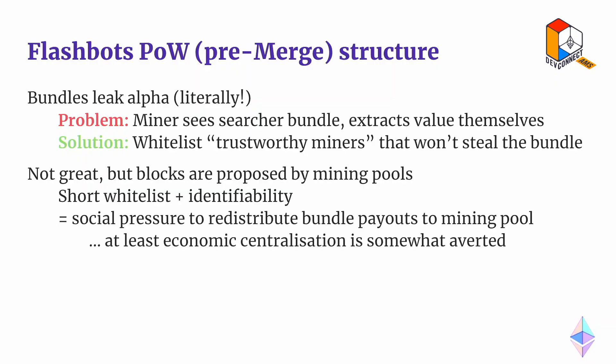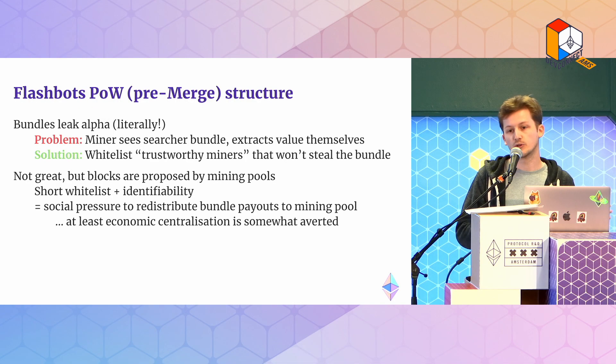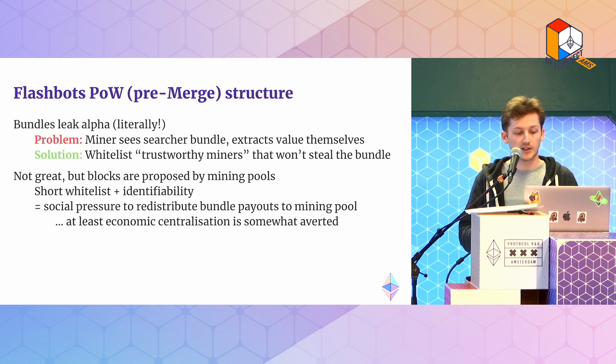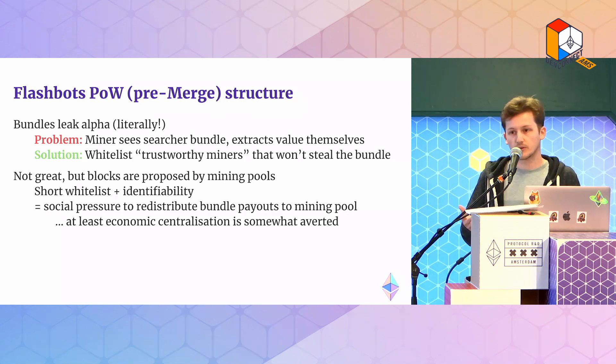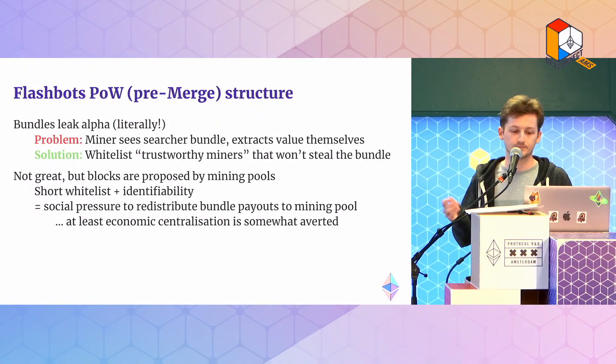Pre-merge in proof of work, this market was organized basically out of protocol. When searchers send these bundles, they literally leak alpha — they tell you what's a nice economic opportunity. There's a risk that the miner they send the bundle to exploits the opportunity instead of them. We call that pre-confirmation privacy. The solution today — Flashbots — is basically whitelisting a set of trustworthy miners that won't steal the bundle, and sharing bundles only with miners in that list. It's not great, but today most miners are mining as part of mining pools. By sending bundles only to a few key players, they can organize this market. The mining pools are very identifiable, so users of these pools can apply pressure saying Flashbots is sending you juicy bundles — please share the rewards with us. But it's still a little brittle.